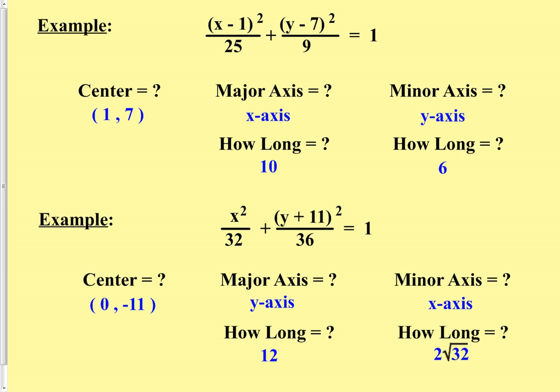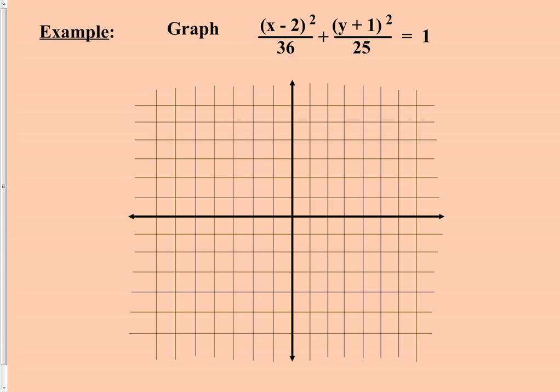The only other thing we could do with these would be to graph them. Let's look at one final example and graph it. Our new equation is: x minus 2, quantity squared, divided by 36, plus y plus 1, quantity squared, divided by 25, equals 1. These three examples have been nice because they have all already equaled 1. Remember, if your ellipse does not have a 1 on the other side of the equal sign, you will divide whatever your constant is back to the side with all the variables so that you can have that 1 as it should be.